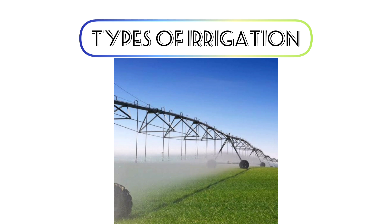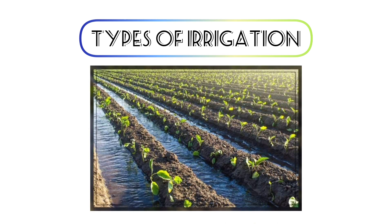In lateral move irrigation, water is scattered throughout the land evenly through a series of pipes or water lines. They can either be controlled by hand, which is less effective, or by a machine for sprinkling water all over the land.